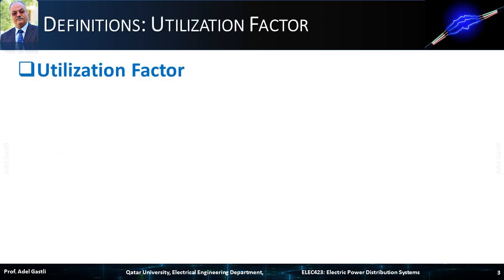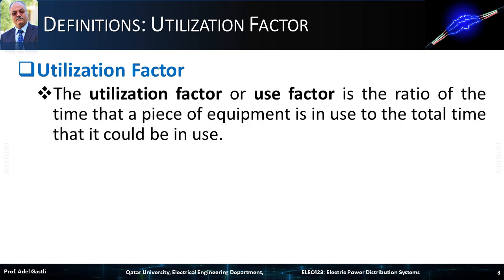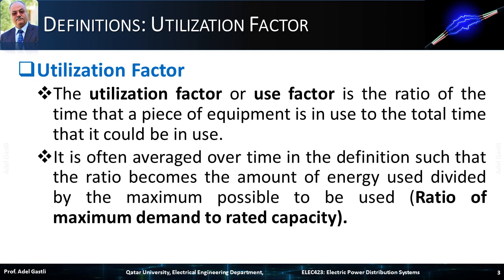Let's start by defining the utilization factor, or use factor. It is the ratio of the time that a piece of equipment is in use to the total time that it could be in use, called base time. It is often averaged over time such that the ratio becomes the amount of energy used divided by the maximum possible to be used — that is the ratio of maximum demand to rated capacity.